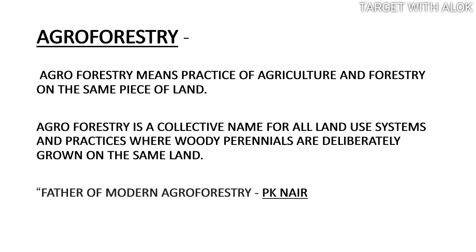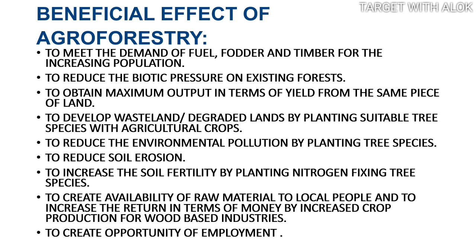In agroforestry, we grow two types of species on the same piece of land — forest trees and agricultural crops. It is a deliberate and judicious plan to grow plants as well as to manage the soil. The father of modern agroforestry was P.K. Nair, who coined or named the term agroforestry.